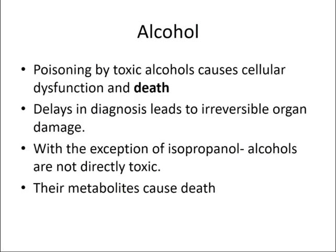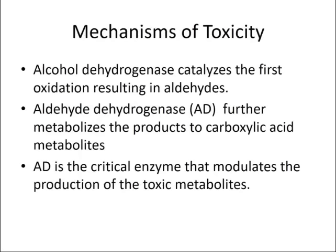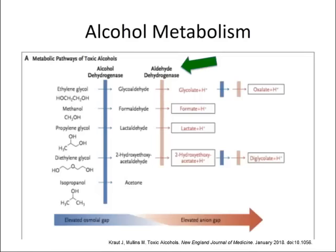Alcohol poisoning causes cellular dysfunction and ultimately death. Delays in diagnosis lead to significant irreversible organ damage. Importantly, the alcohols themselves — with the exception of isopropanol — are not directly toxic. It's their metabolites that cause organ dysfunction and death. Alcohol dehydrogenase catalyzes the alcohol into aldehyde, but the key enzyme is aldehyde dehydrogenase, which breaks down these metabolites into the active form that causes cell death. All parent alcohols — methanol, propylene glycol, ethylene glycol — are broken down into these damaging active metabolites.